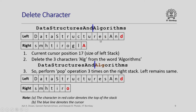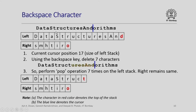To delete a character — current cursor position is 17. Suppose I want to delete three characters 'a', 'l', 'g' from the word 'algorithm': I perform the pop operation three times on the right stack; the left stack remains the same. For backspace, suppose I want to delete seven characters to the left — 'U', 'R', 'E', 'S', capital 'A', 'N', 'D' — I perform pop operation seven times on the left stack, leaving just 'data struck'. This demonstrates the impact of backspace and delete using our two-stack model.